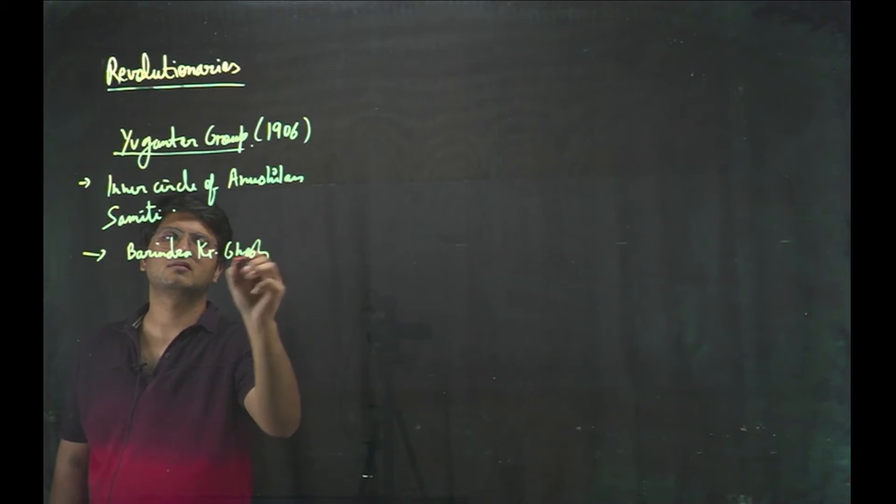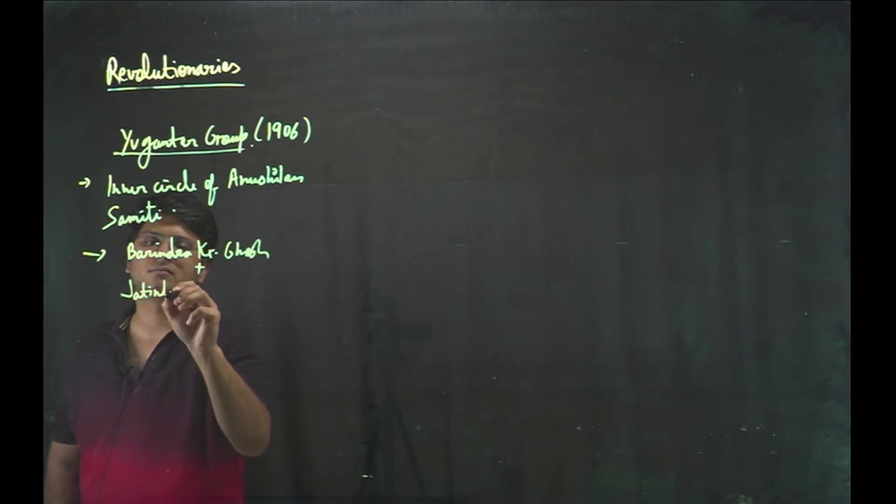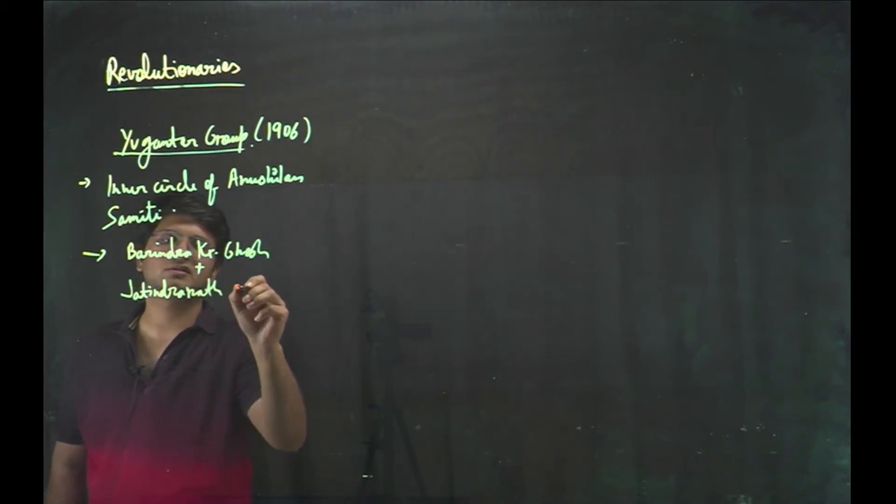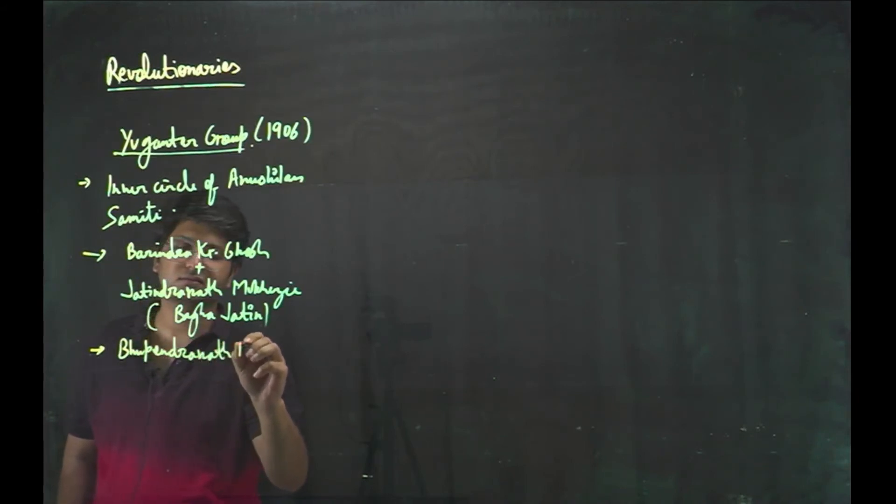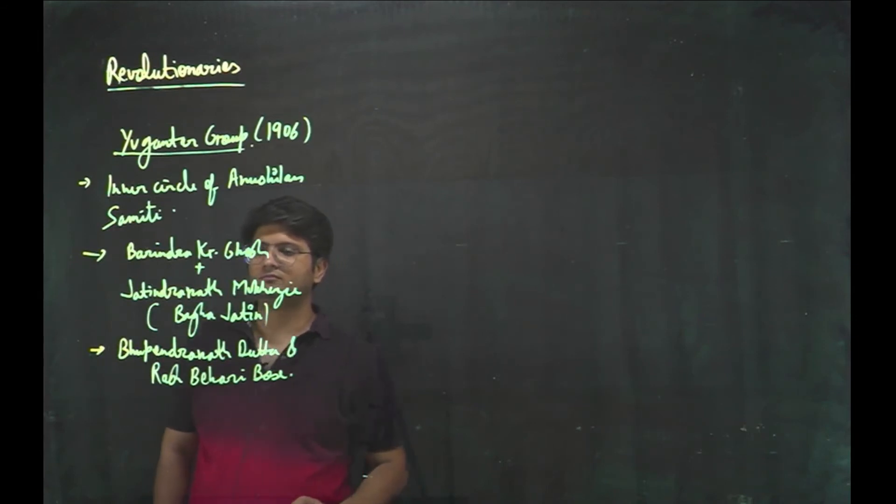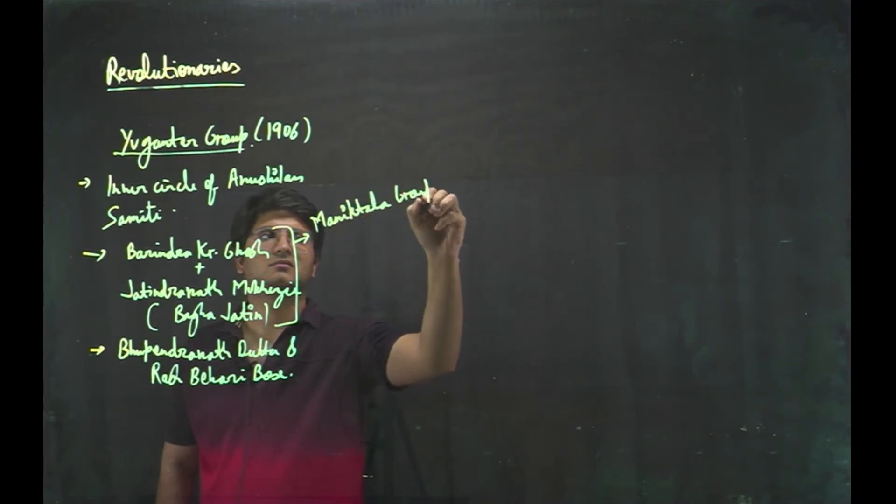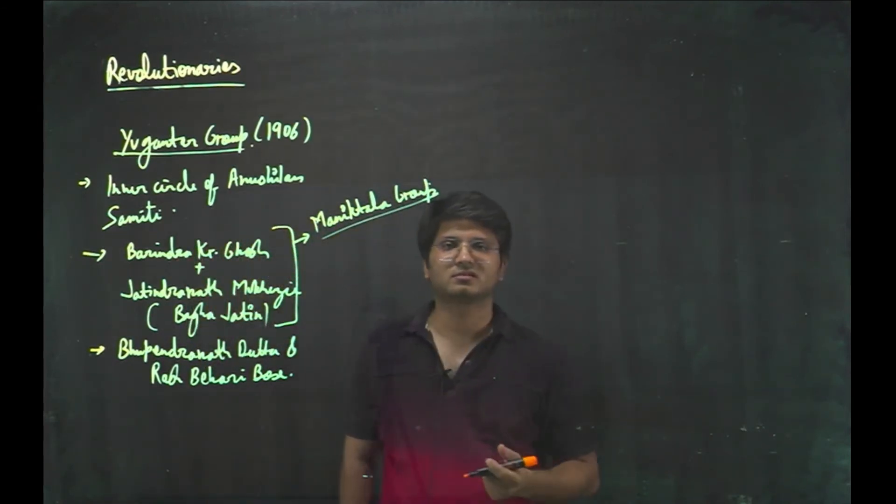Main leaders of this group were Barindra Kumar Ghosh, Jatindranath Mukherjee, which is also called as Bagga Jatin. Other important leaders were Bhupendra Nath Datta and Raj Bihari Ghosh. These people, these two also formed Maniktala group. And they supplied to people, Maniktala group.